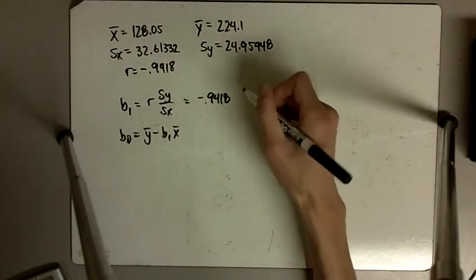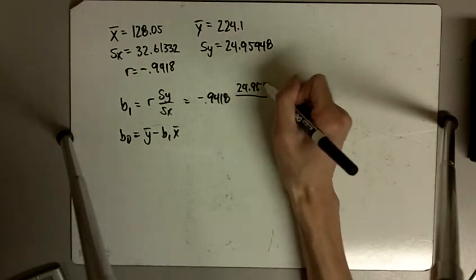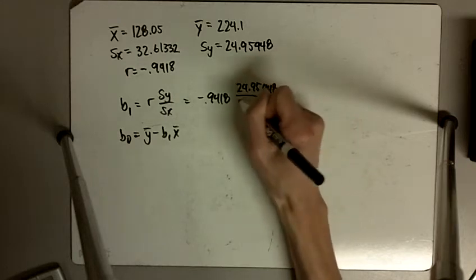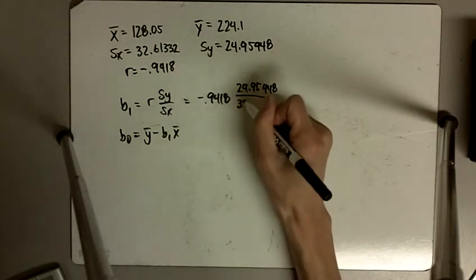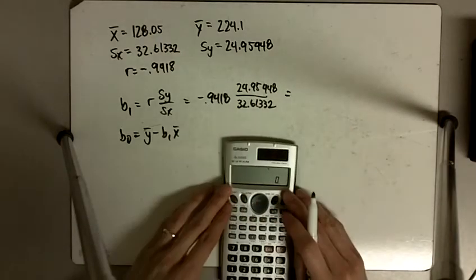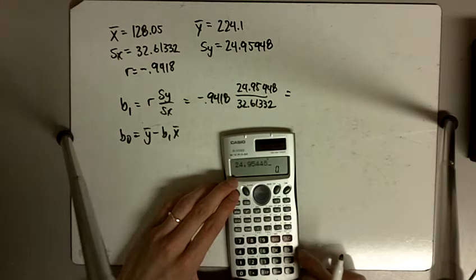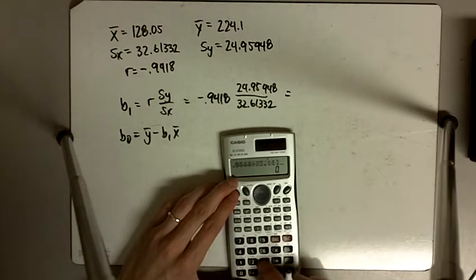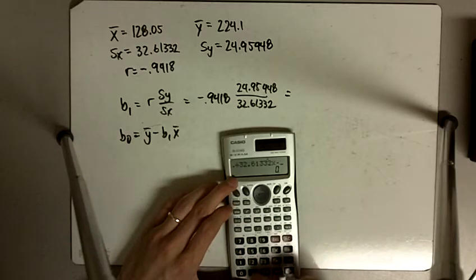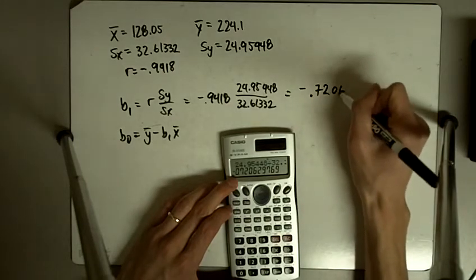Our R is negative 0.9418. My standard deviation of Y is 24.95448, and my standard deviation of X is 32.61332. So just punching all of this in, 24.95448 divided by 32.61332 times negative 0.9418. So I get negative 0.7206.